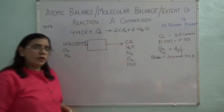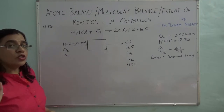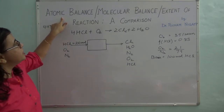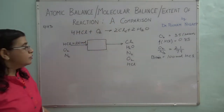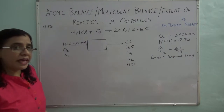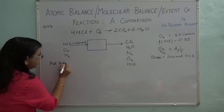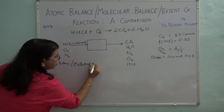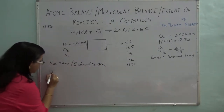The next step was always to calculate your degree of freedom for the problem. Since I am going to compare atomic species balance, molecular species balance, and extent of reaction, I will first calculate the degree of freedom for molecular balance and extent of reaction together, because they are very similar.